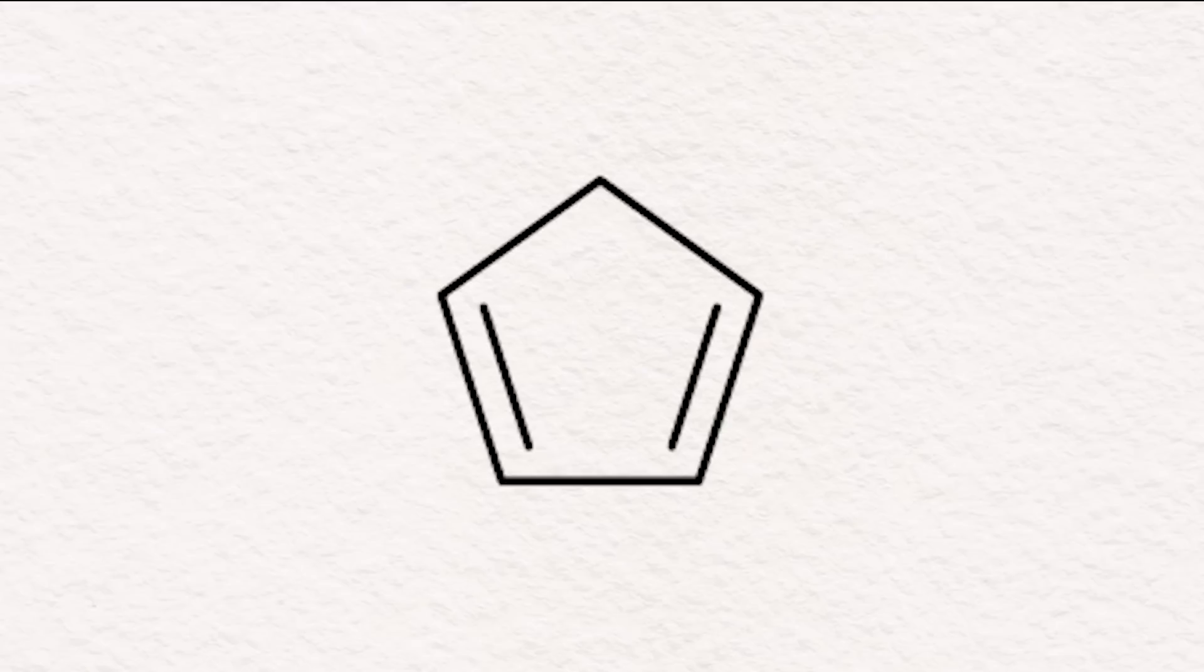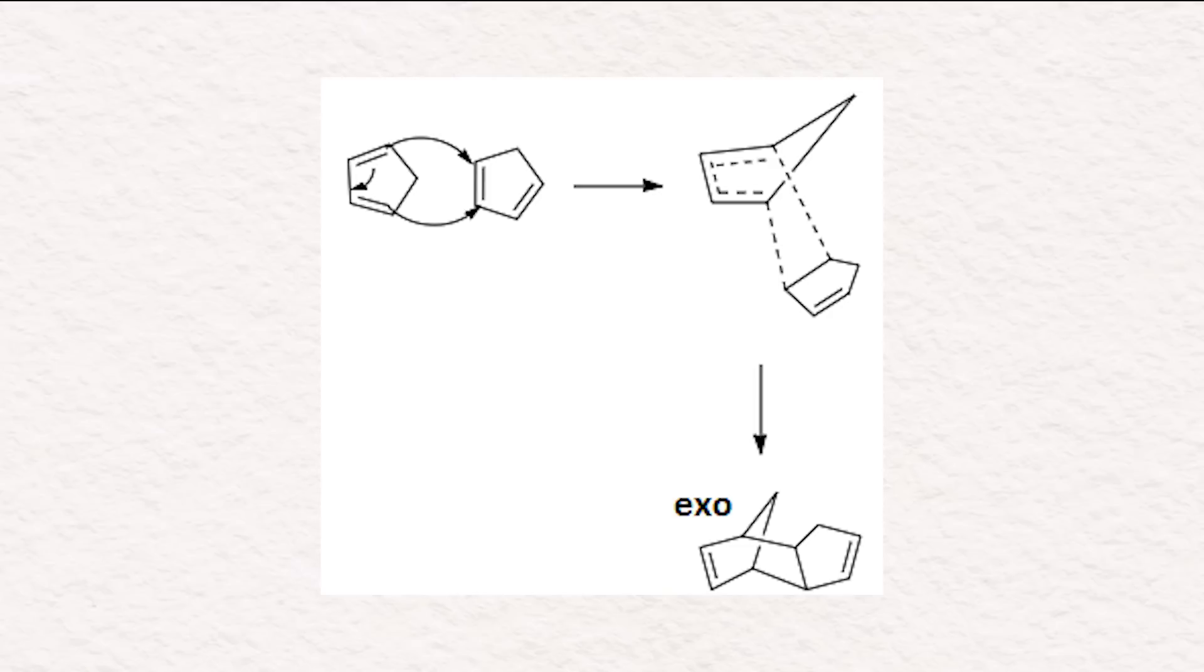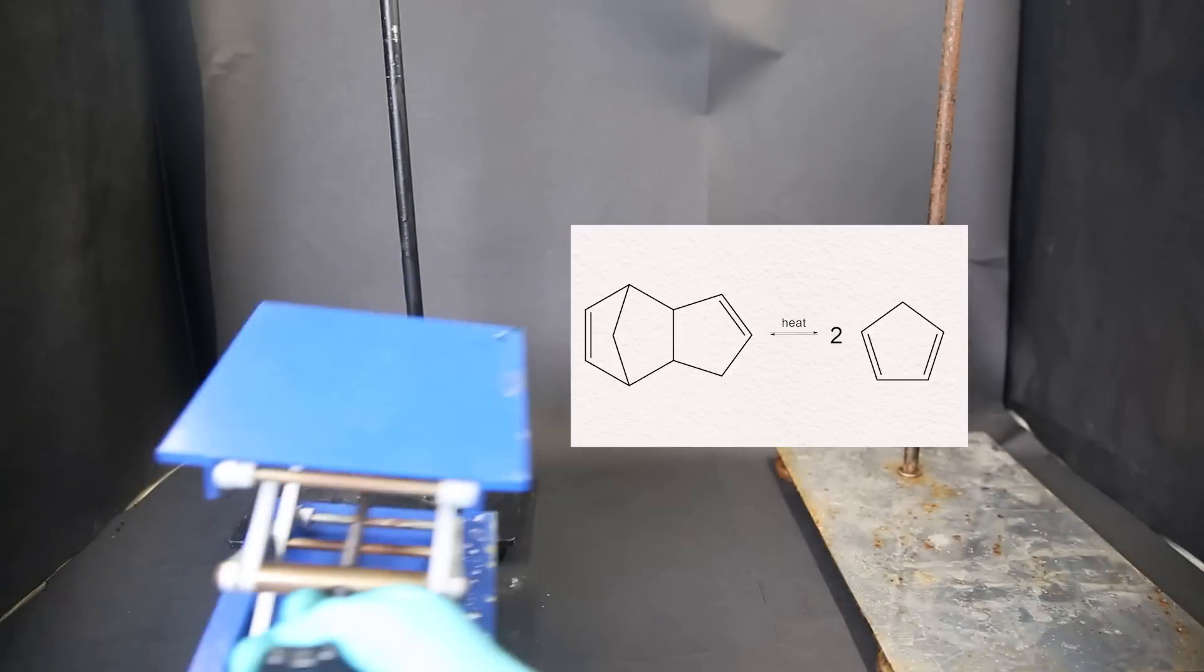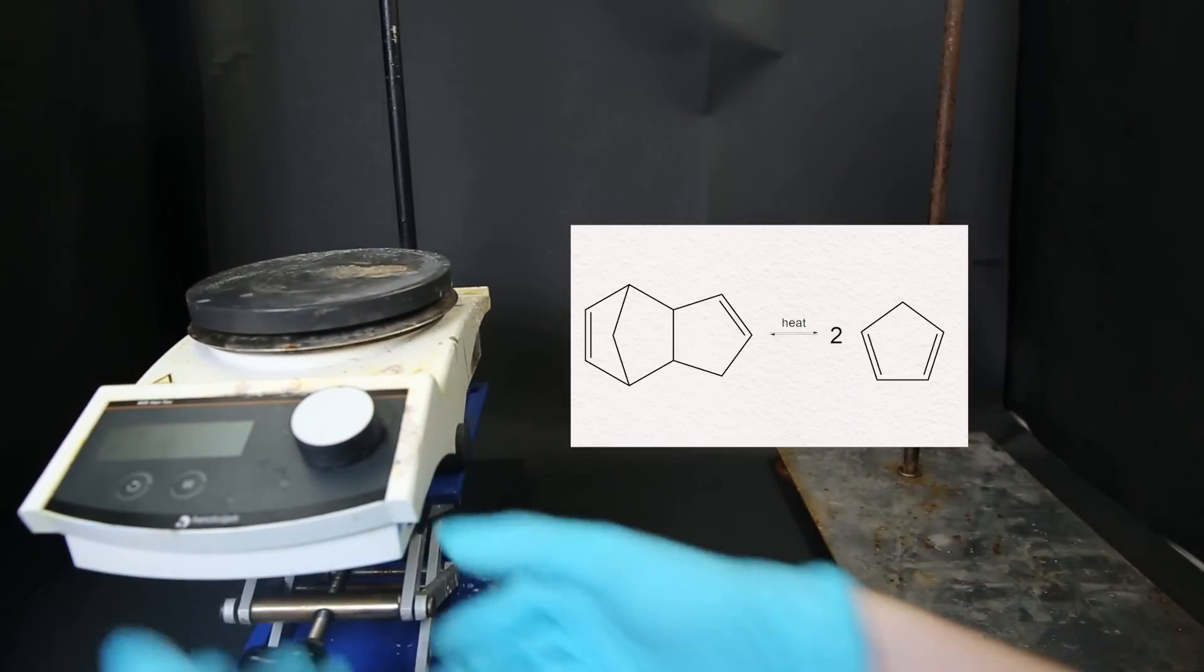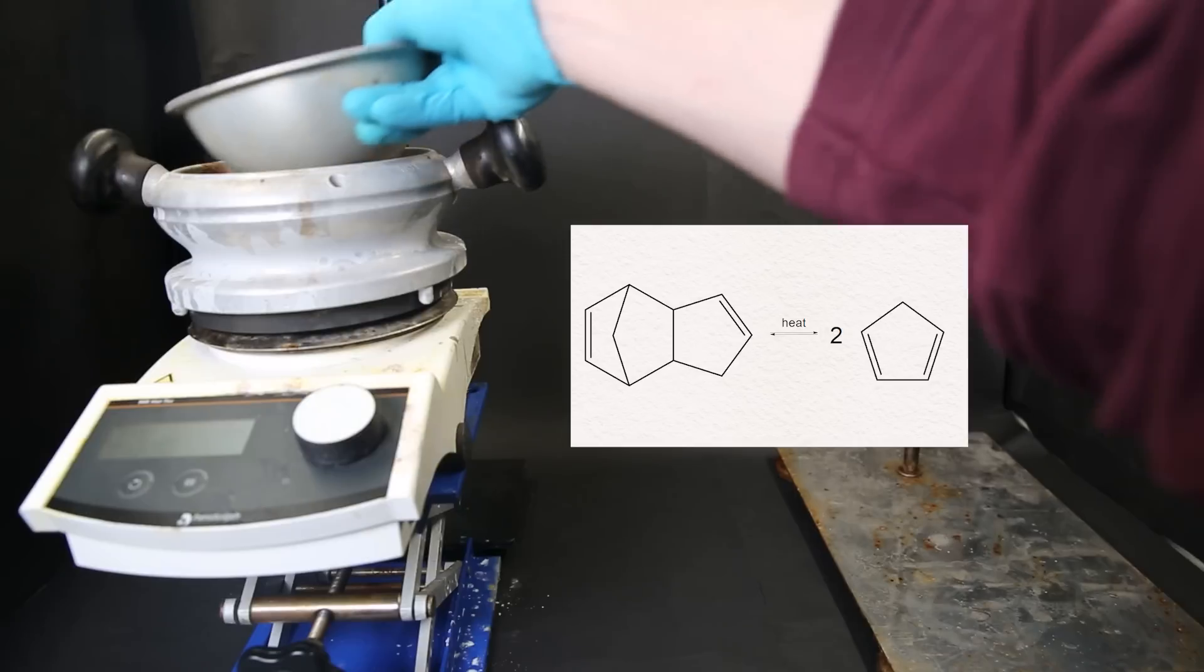Before I can start with the synthesis of ferrocene, I have to produce some fresh cyclopentadiene. Since cyclopentadiene is unstable, and two cyclopentadiene molecules easily undergo a Diels-Alder reaction, we have to crack it from the product dicyclopentadiene. With strong heating, this molecule will fall apart back into two cyclopentadiene molecules.